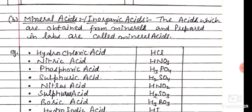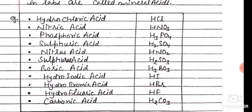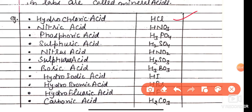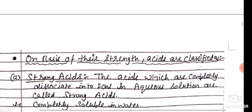Next are Mineral acids, also called Inorganic acids. The acids which are obtained from minerals and prepared in labs are called mineral acids or man-made acids. Examples include: Hydrochloric acid (HCl) — the strongest acid in nature, Nitric acid (HNO₃), Phosphoric acid (H₃PO₄), Sulfuric acid (H₂SO₄), Nitrous acid (HNO₂), Sulfurous acid (H₂SO₃), Boric acid (H₃BO₃), Hydroiodic acid (HI), Hydrobromic acid (HBr), Hydrofluoric acid (HF), and Carbonic acid (H₂CO₃).